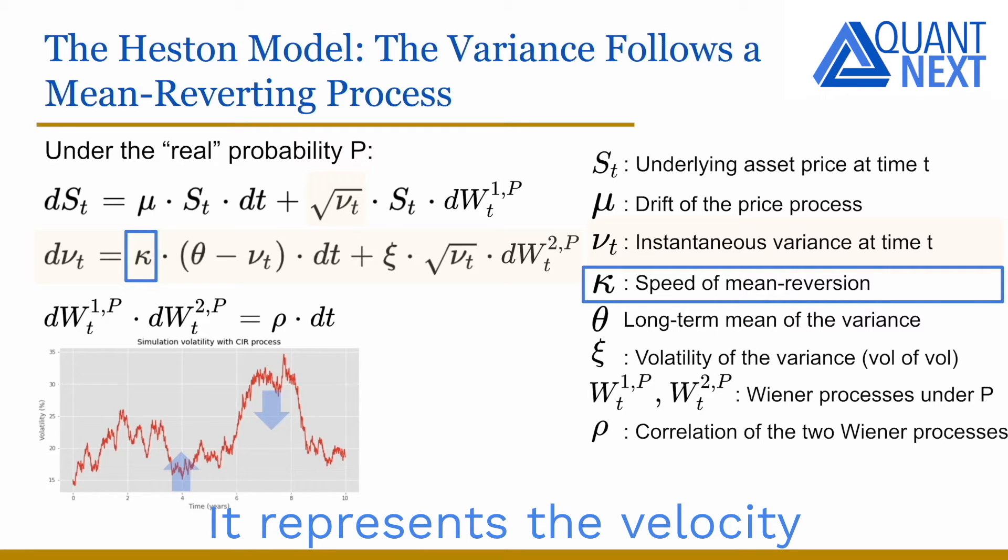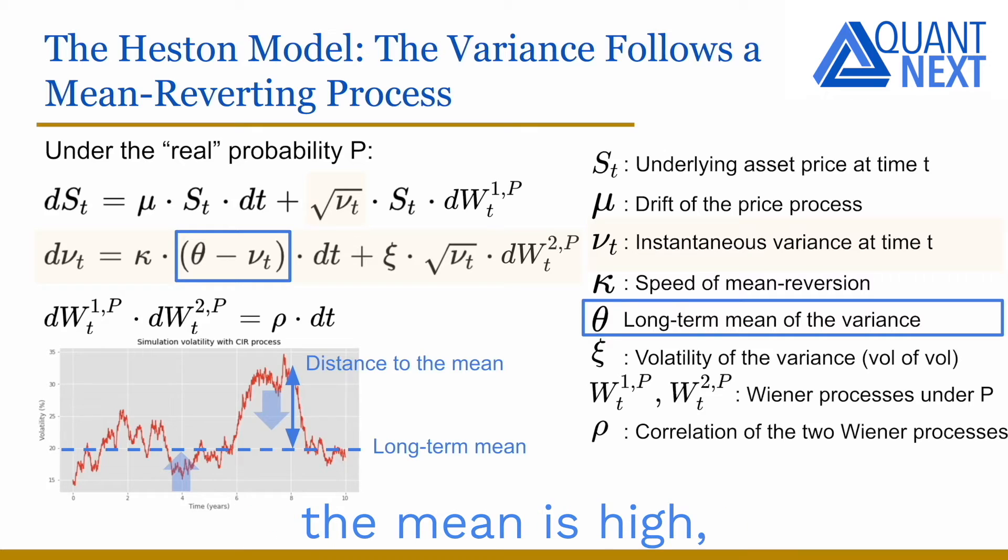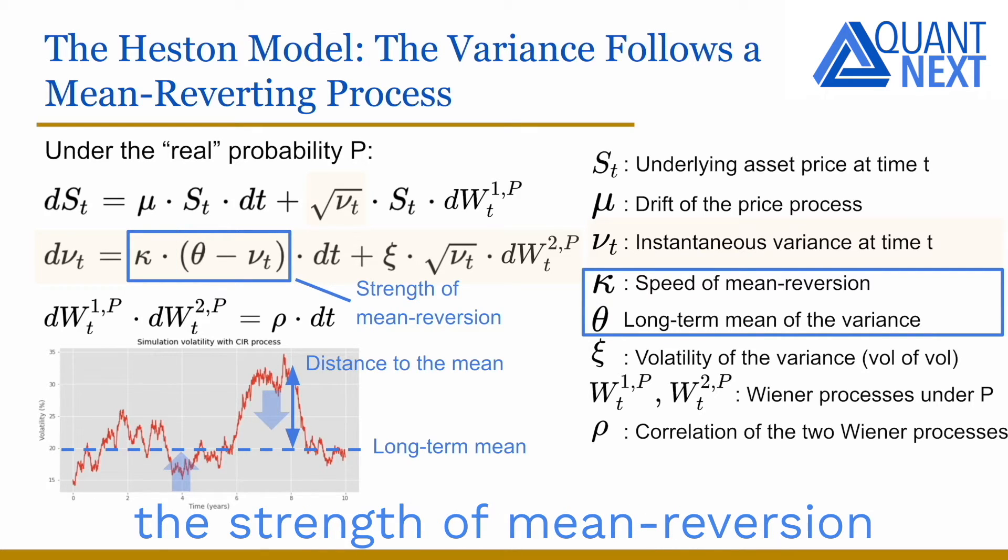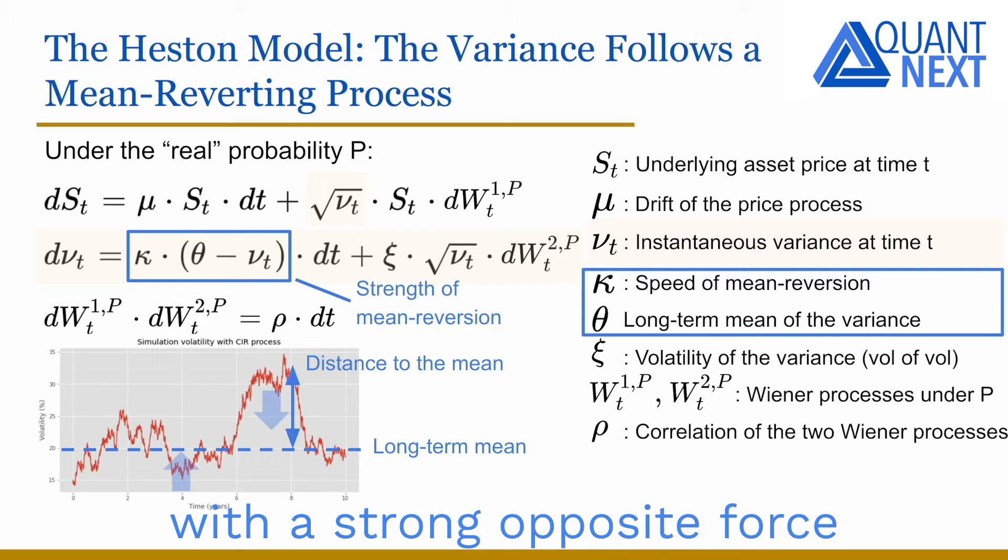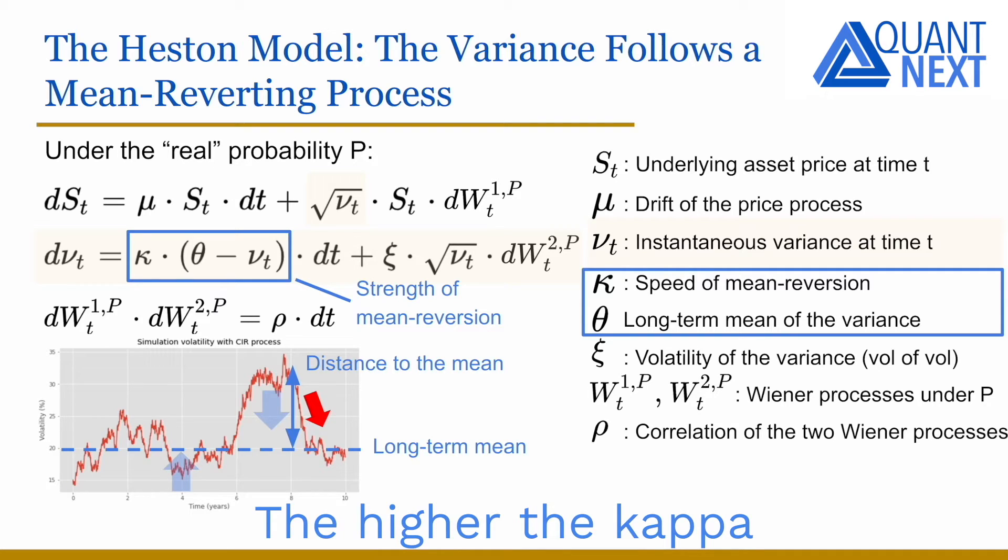It represents the velocity at which the process will revert to its mean. Theta is the long-term mean of the variance. When the distance to the mean is high, the strength of mean reversion will be high as well, with a strong opposite force pushing the trajectory back to its mean. The higher the kappa or the distance to the mean, the stronger the mean reversion force.